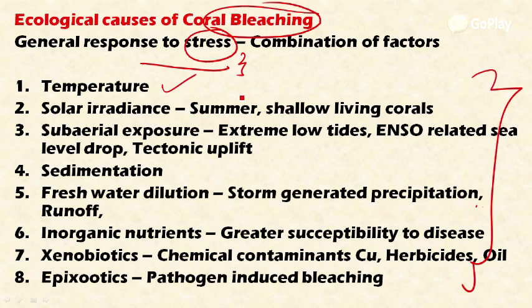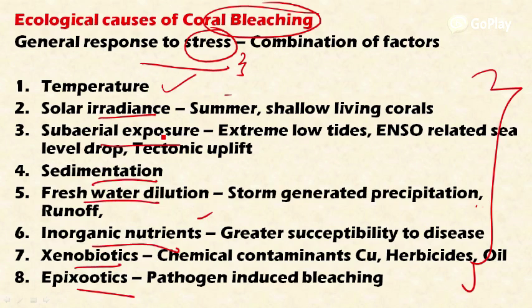First, temperature: coral species live within a relatively narrow temperature range, and any extreme — lower or higher — induces coral bleaching. Corals are acclimatized to a small, narrow range of temperature, so any extreme leads to coral bleaching, that is, the death of zooxanthellae within the coral reefs.